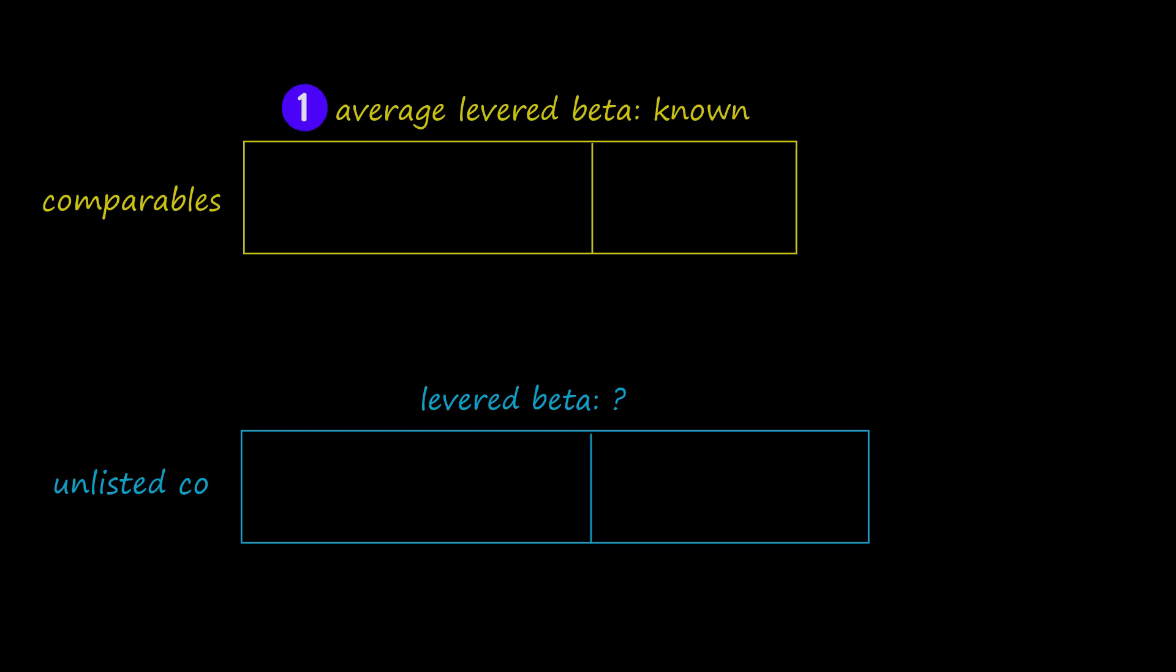So, we start with the comparables' average levered beta and use their average DE and tax rate to calculate an average unlevered beta for the comparables.